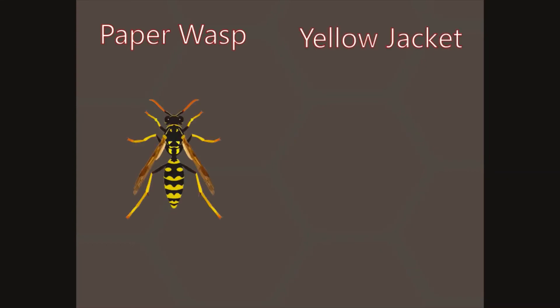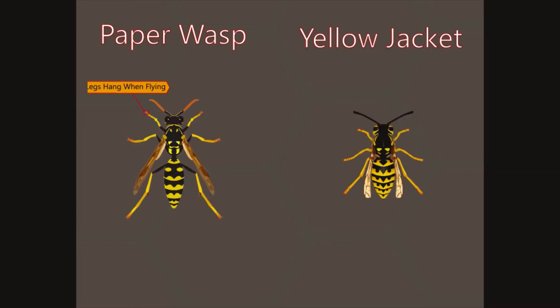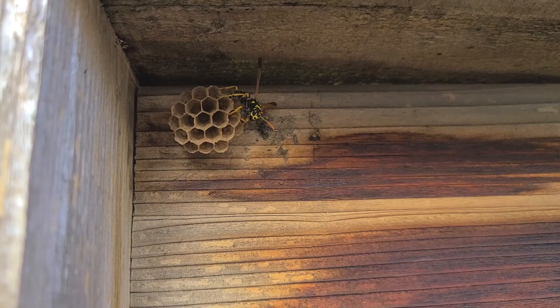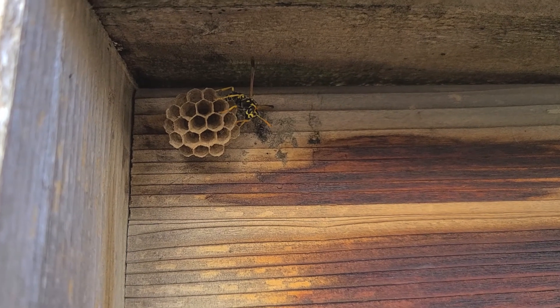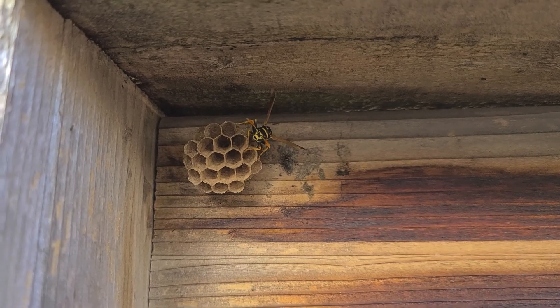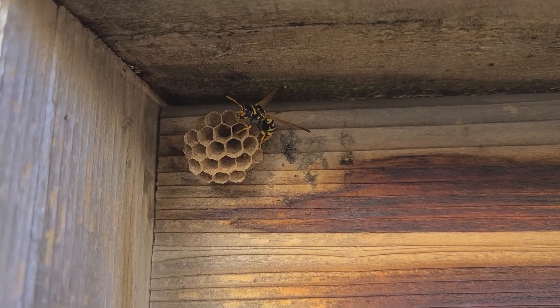First, it is important to identify what type of pest you have. Paper wasps have thin segmented bodies with a thin waist, while yellow jackets have shorter and thicker bodies. Here we have a paper wasp nest, which resembles a honeycomb and is attached to a structure.